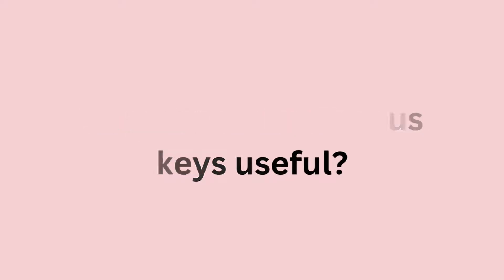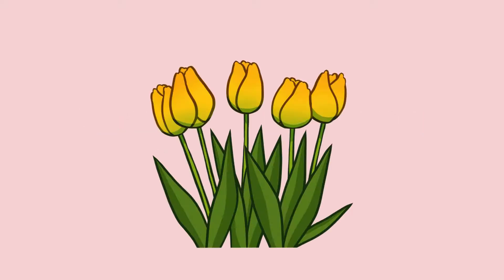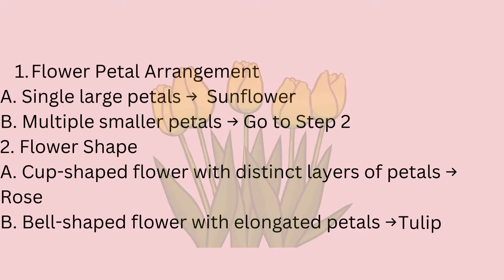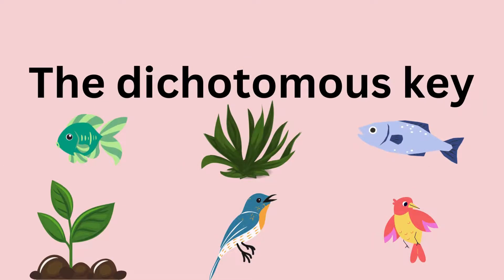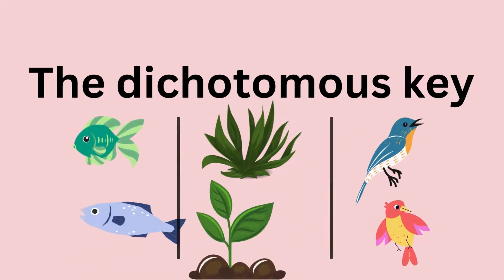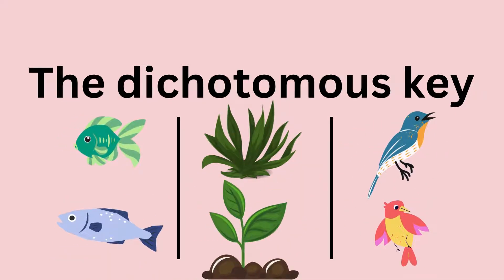Why are these keys so useful? Imagine you're out exploring in the woods and come across a plant you've never seen before. With a dichotomous key, you can systematically compare its characteristics to the options provided, narrowing down possibilities until you pinpoint its identity. This tool helps us organize and categorize the vast diversity of life on our planet.